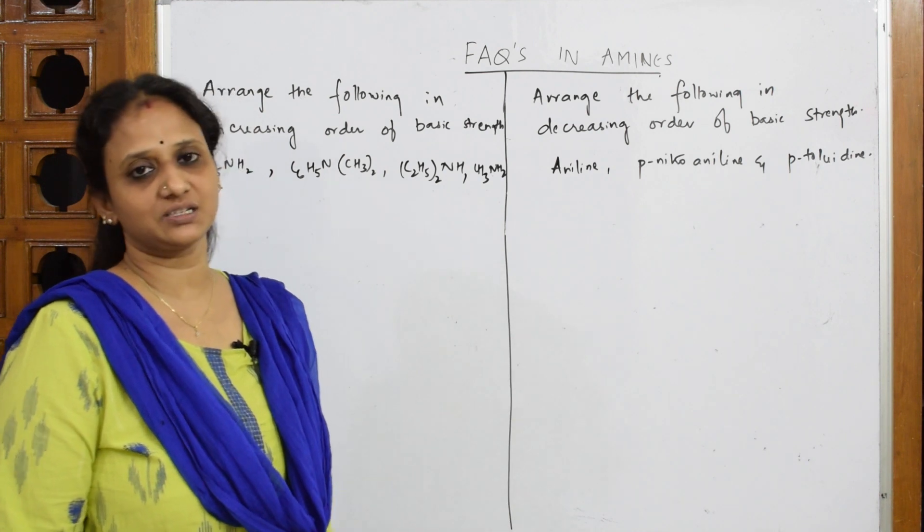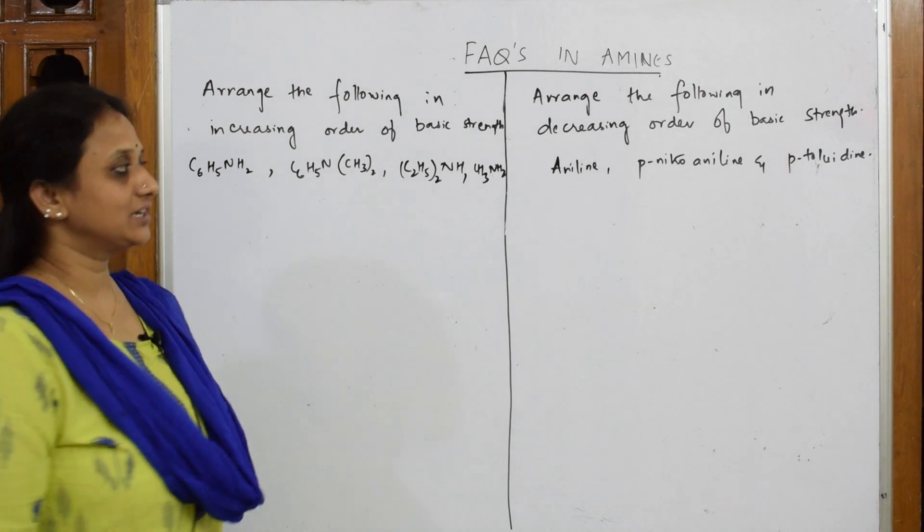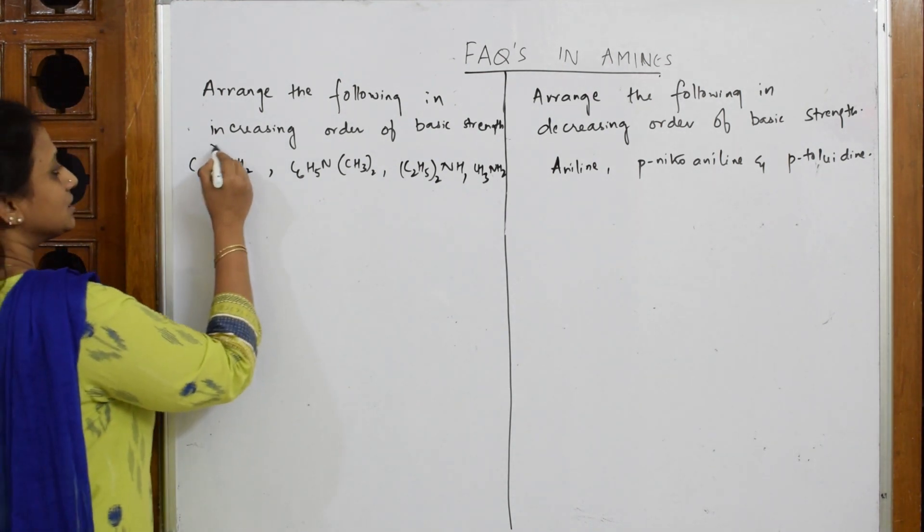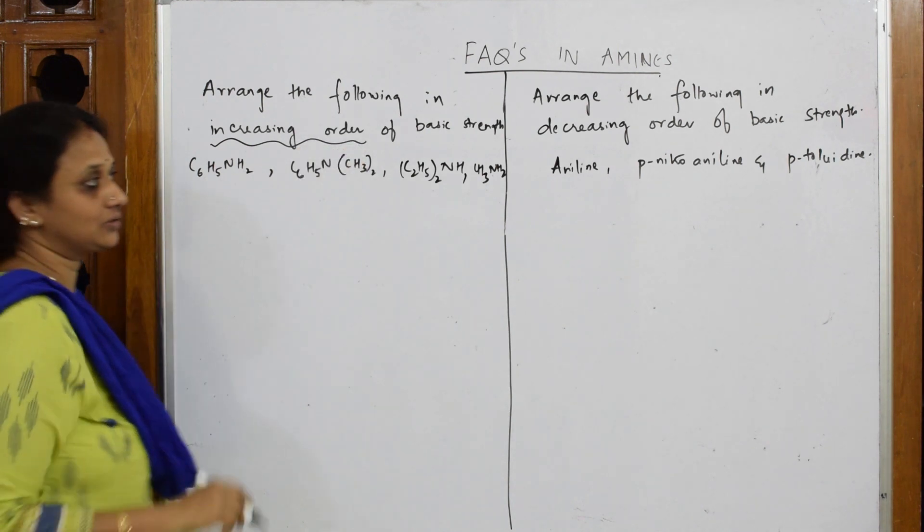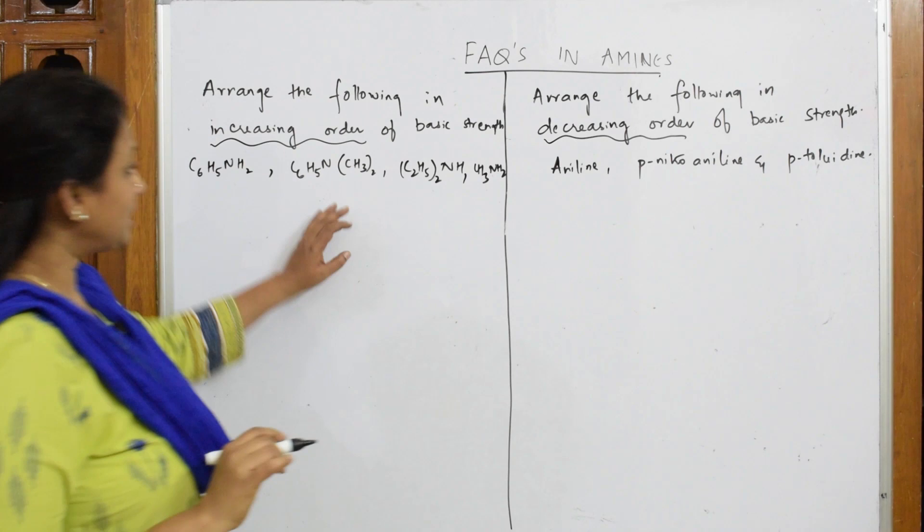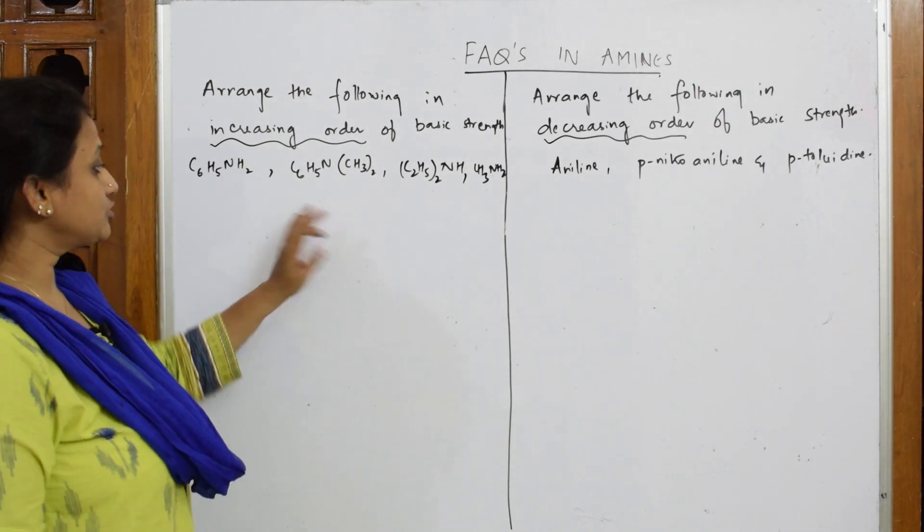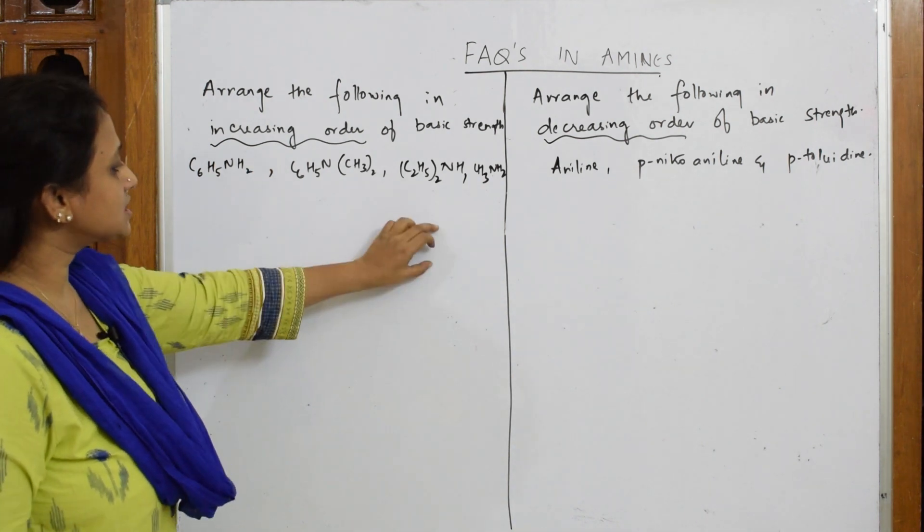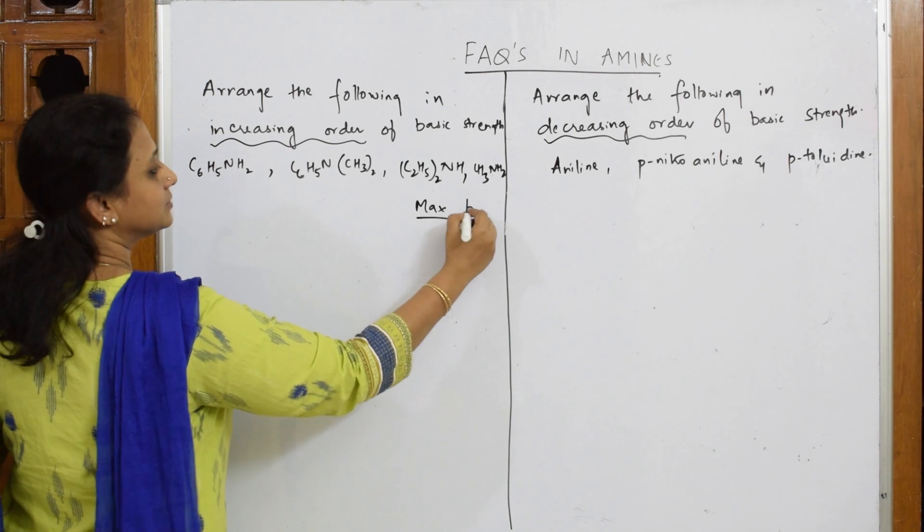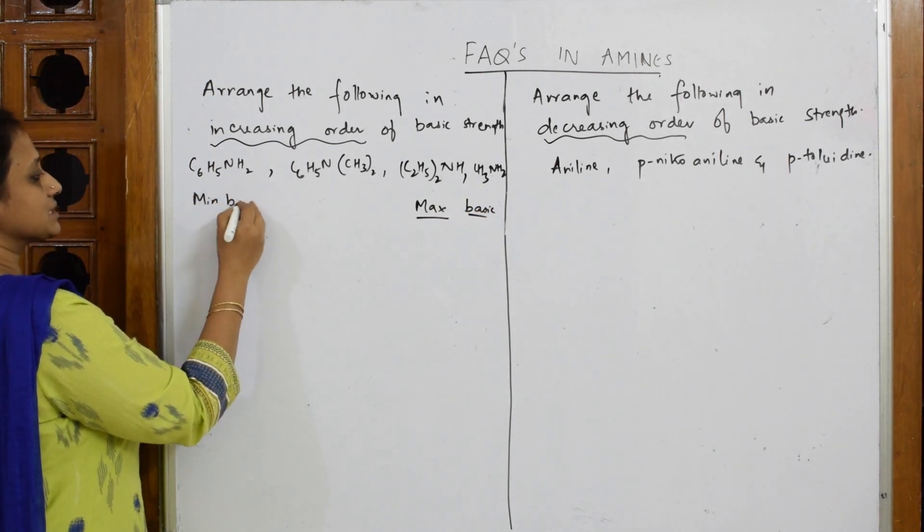Now let's see this question: arrange the following in increasing order of basic strength. Different examples are given to us. What do they ask me? This is the concept of increasing order. When I'm trying to arrange these compounds, I have to be careful - the last one should be maximum basic and the first should be minimum basic.